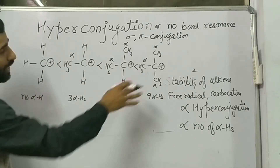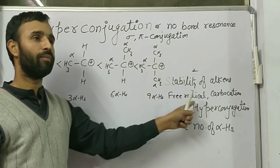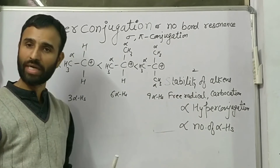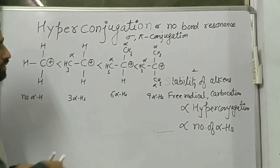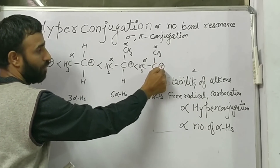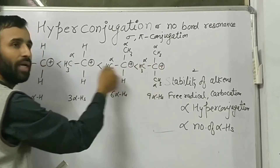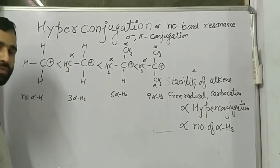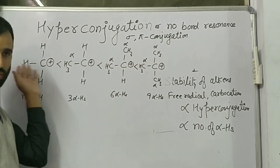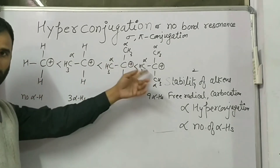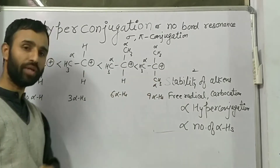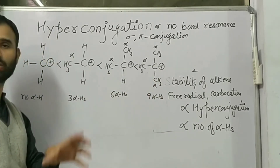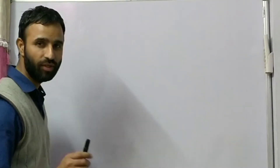On the same line, we can explain the stability of free radicals. In the case of free radicals, carbocation is simply replaced by a free radical. The stability order is the same, because both carbocations and free radicals are electron deficient.